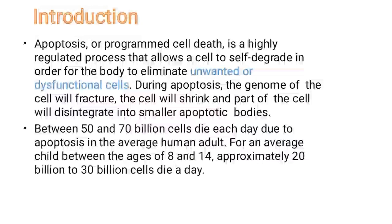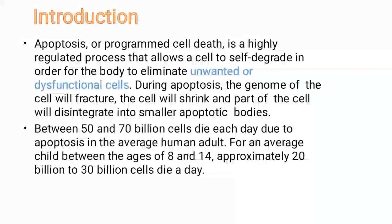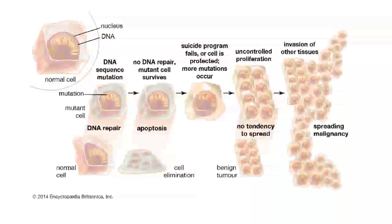Between 50 and 70 billion cells die each day due to apoptosis in the average human adult. In short, 50 to 70 billion cells in your body undergo apoptosis every day. For every child between the ages of 8 and 14, approximately 20 to 30 billion cells die per day. This is the statistical data about the apoptosis process.